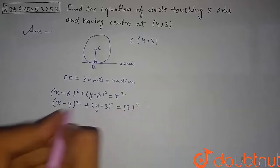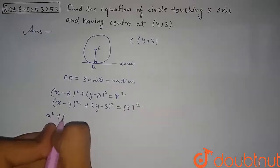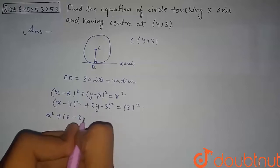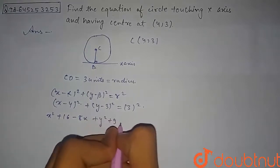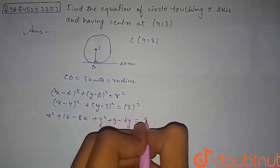So from here, opening these brackets, we get this as x² here will be plus 16 and this will be minus 8x. Similarly, this will be y² here will be plus 9 and this will be minus 6y, and that will be equal to 3² which is 9.